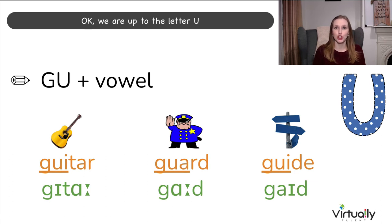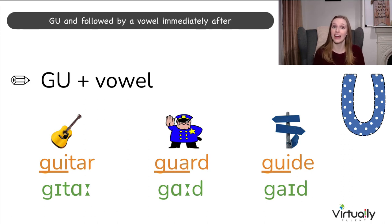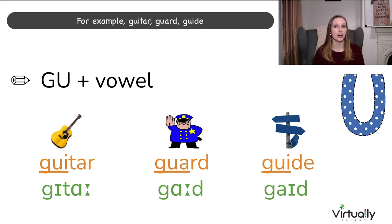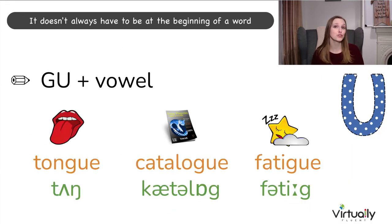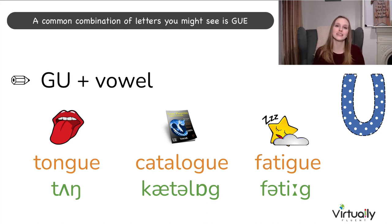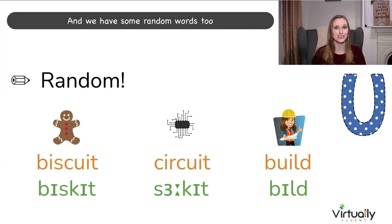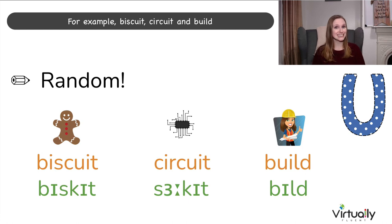We're up to the letter U. This is not normally pronounced when it is with a G — GU followed by a vowel immediately after. For example: guitar, guard, guide. It doesn't always have to be at the beginning — a common combination is GUE at the end of a word: tongue, catalogue, fatigue. And we have some random words too: biscuit, circuit, and build.